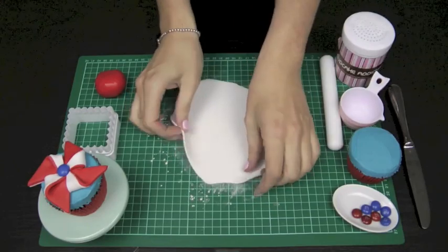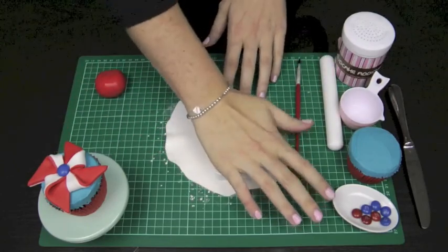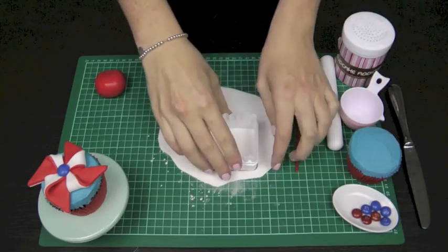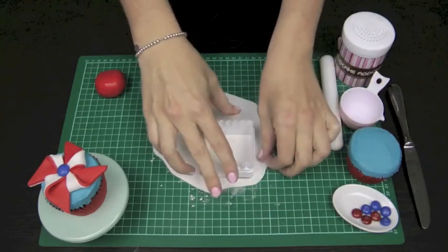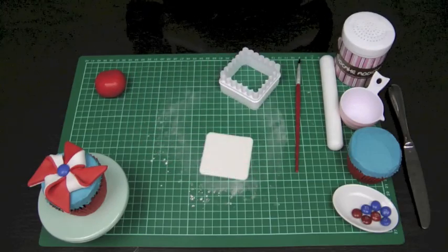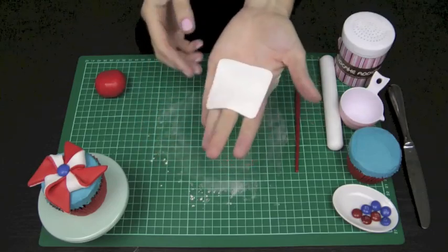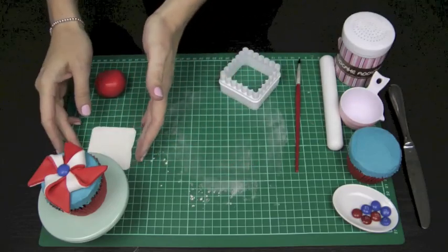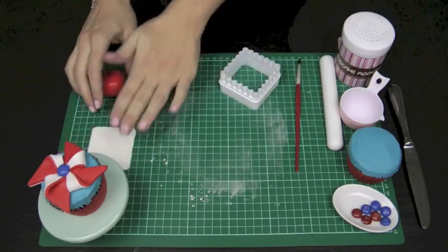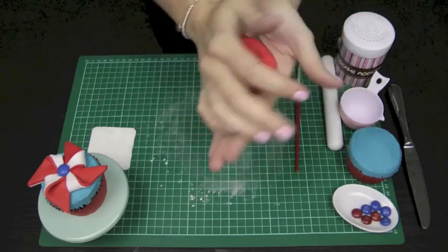So I've rolled that out nice and thin and I'm just going to take my square cutter. You'll notice I've just sort of moved it around in the fondant there and that's just to give me a really nice clean edged cut. Take that one out of the cornflour, I'm going to flip it so that my good side is now on the mat and the cornfloured side is facing me and then I'm going to give my red a little knead.